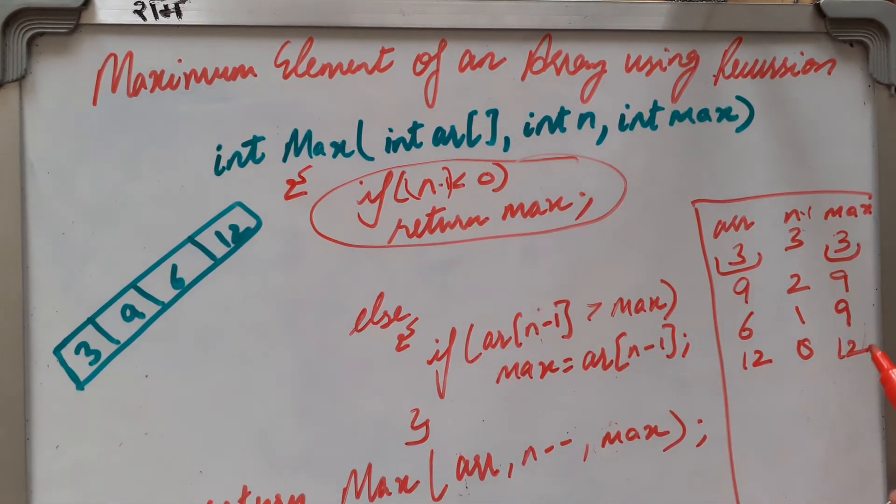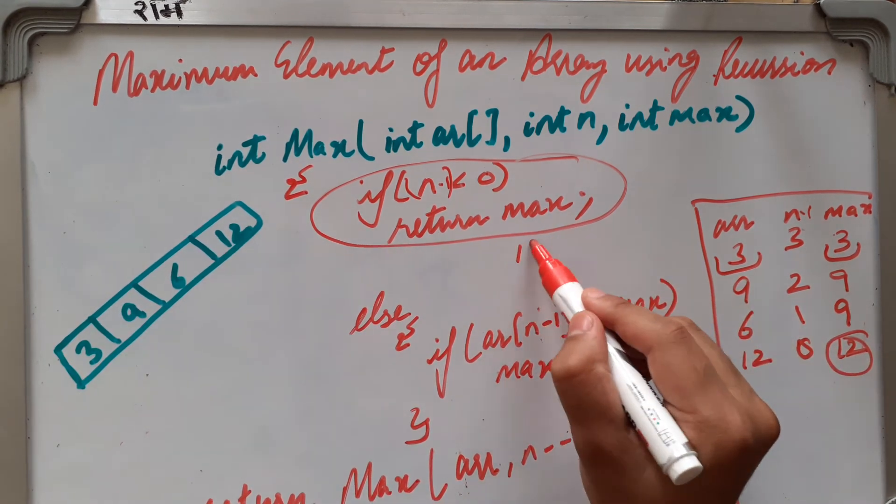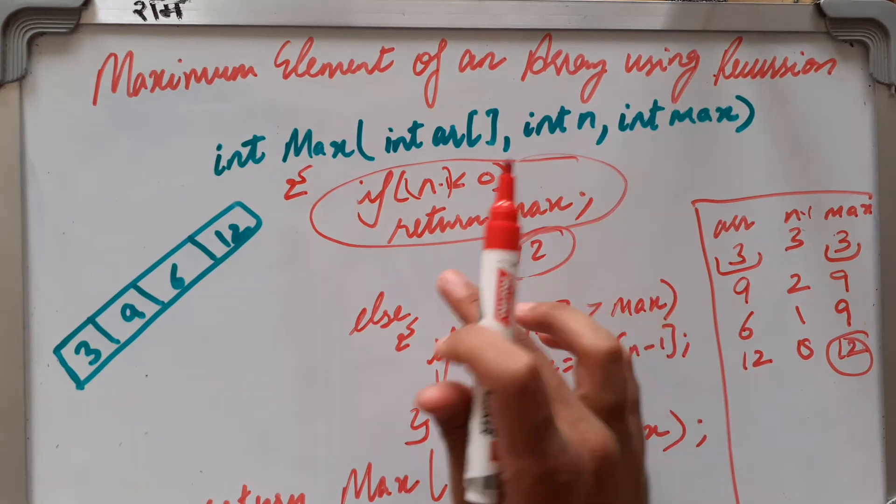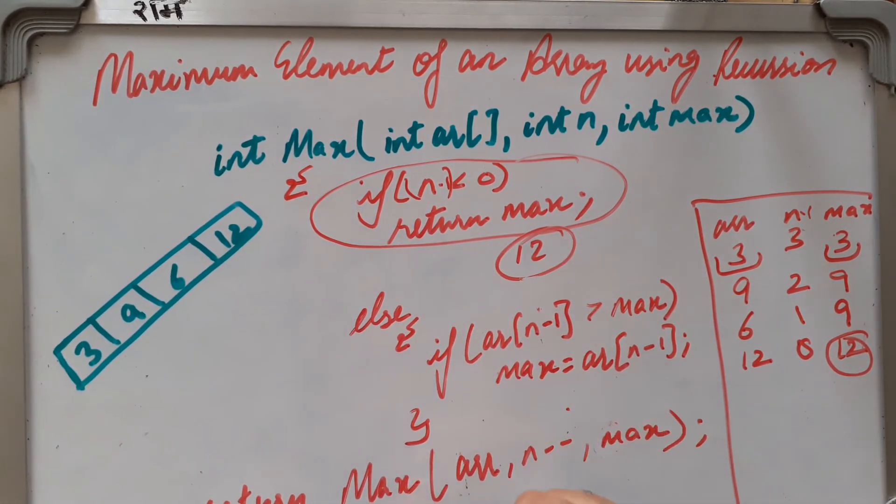And what is the max? Max having value that is 12, it will return 12. It is not returning 12 like this, this condition is not true, it will again go in else part and then in this part and it will again call the function. Thank you.